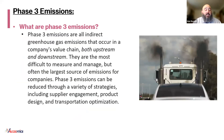Phase three, specifically, are all indirect greenhouse gas emissions that occur in a company's value chain, both upstream and downstream. They are the most difficult to measure and manage, but often the largest source of emissions for companies. Phase three emissions can be reduced through a variety of strategies, including supplier engagement, product design, and transportation optimization.